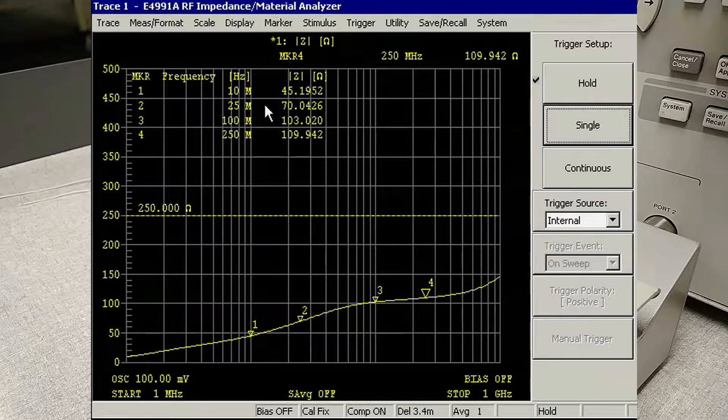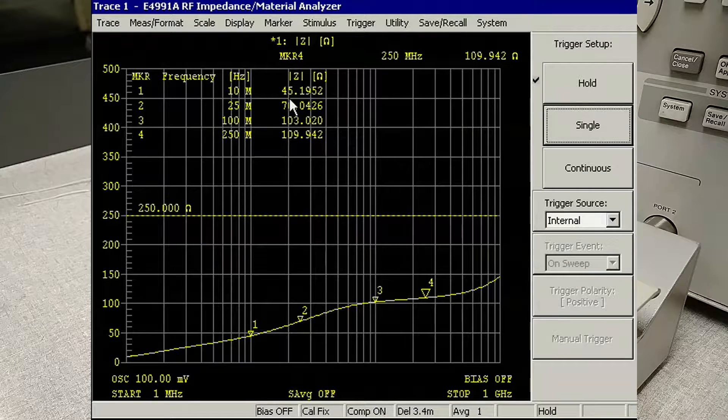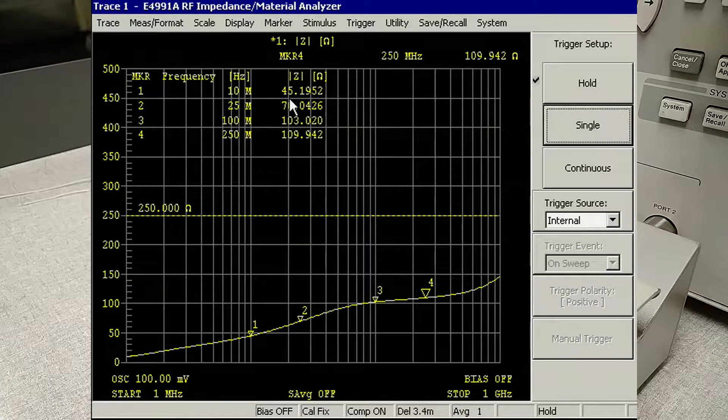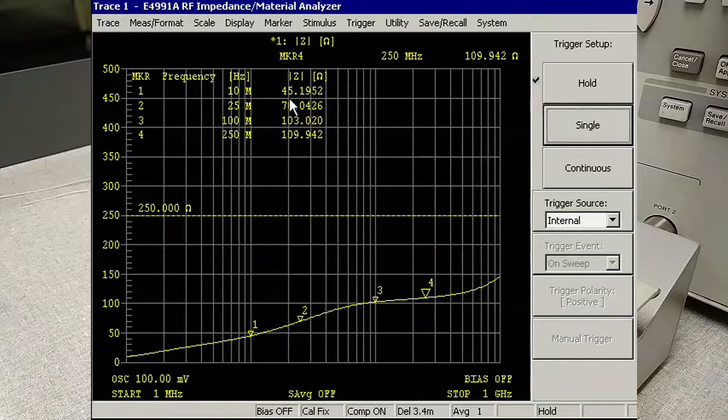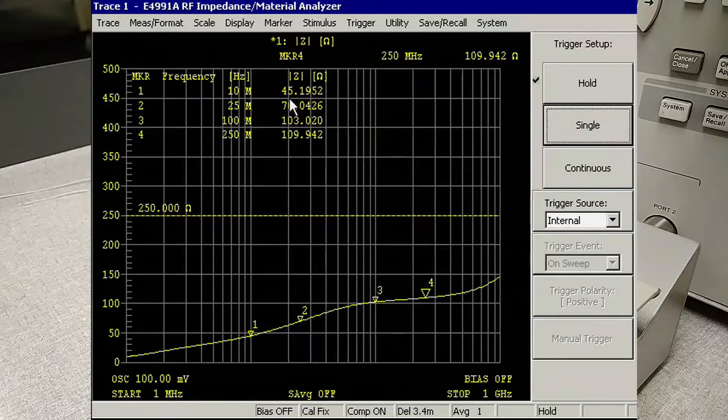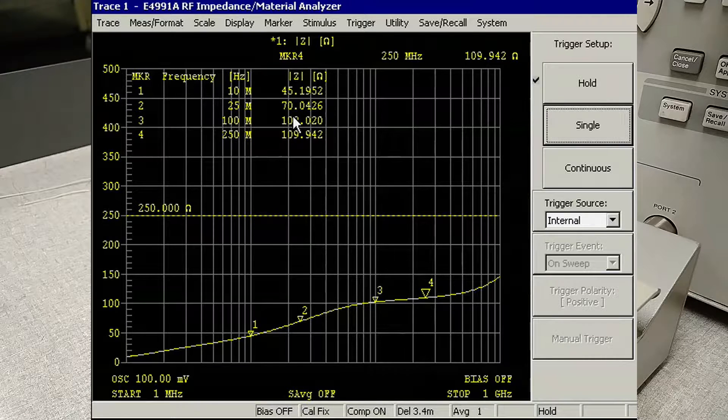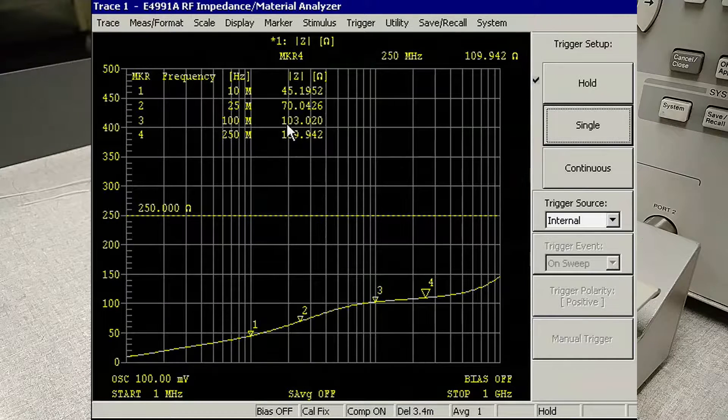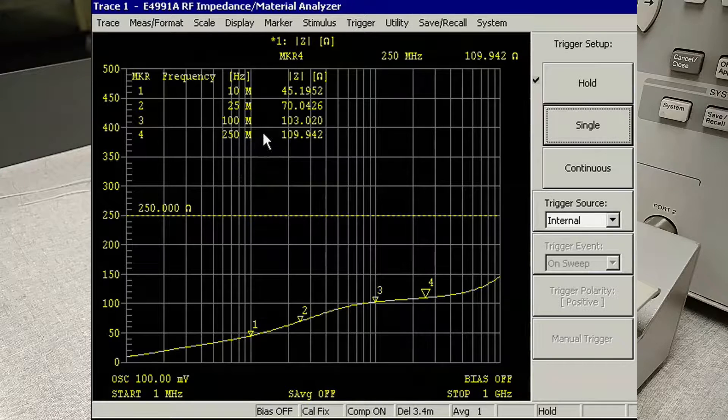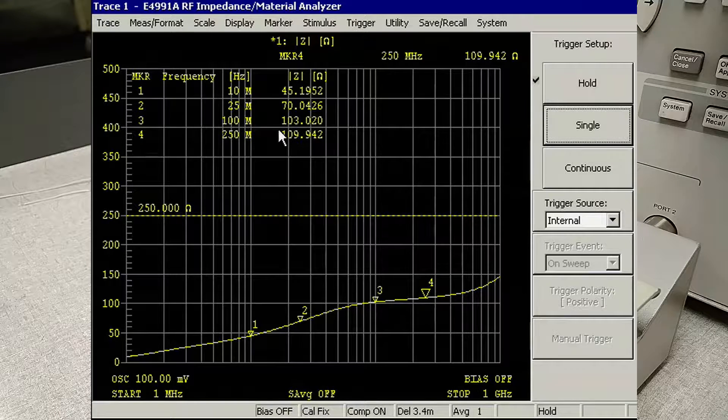So we can see the impedance values that we have here roughly match what we list as typicals. At 10 megahertz we list 42 as a typical. At 25 we list 63 ohms as a typical. At 100 we list 92 ohms as a typical.